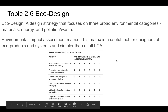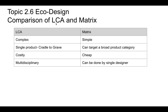Comparing life cycle analysis and the matrix: life cycle analysis is super complex — like that 300-page battery document — whereas a matrix is much simpler. Life cycle analysis focuses on one single product cradle to grave, while a matrix might look at a broad product category, like all cell phones, since the environmental matrix for an iPhone is roughly the same as for an LG phone. Life cycle analyses are very expensive because they're multidisciplinary, requiring many people and a lot of time. A matrix is much cheaper — a single person can do it.